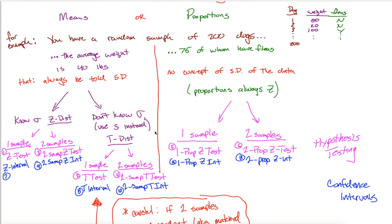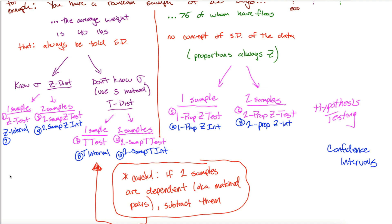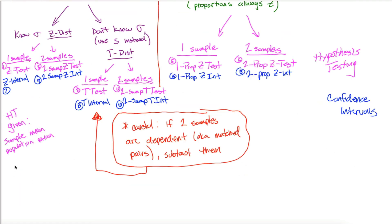Another tricky case: when doing hypothesis testing for means, you'll be given a sample mean and a population mean. It might look like two different samples but they're not — it's one sample and one population. So use a z test or t test, not a two sample z test or two sample t test. With confidence intervals you don't have this issue, because you don't know the population mean — that's what you're building the interval for.